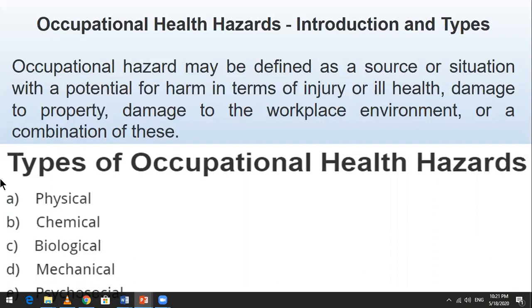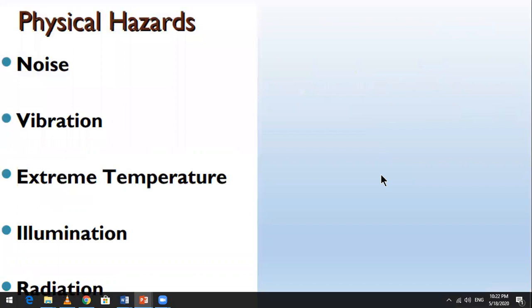There are five types of occupational health hazards: physical hazards, chemical hazards, biological hazards, mechanical hazards, and psychological hazards. We will discuss each one.